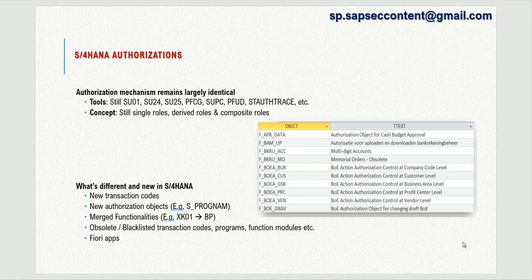With every S4HANA release, many transaction codes, programs, and function modules are either replaced with new ones or have been blacklisted, meaning you cannot use those transaction codes anymore. Some blacklisted transaction codes will redirect you to other transaction codes; some you cannot use at all. The same applies to programs and function modules.